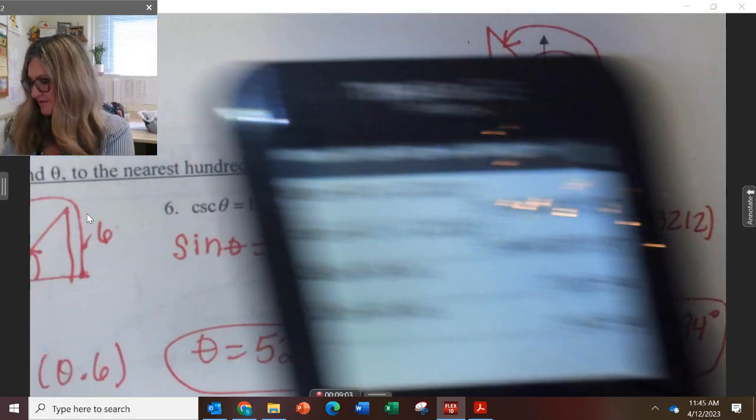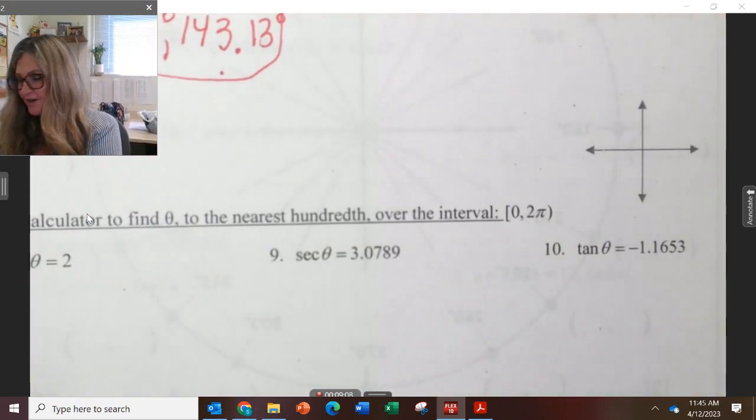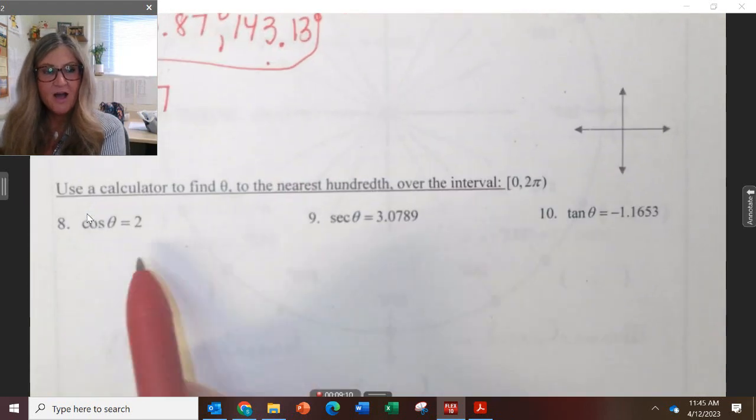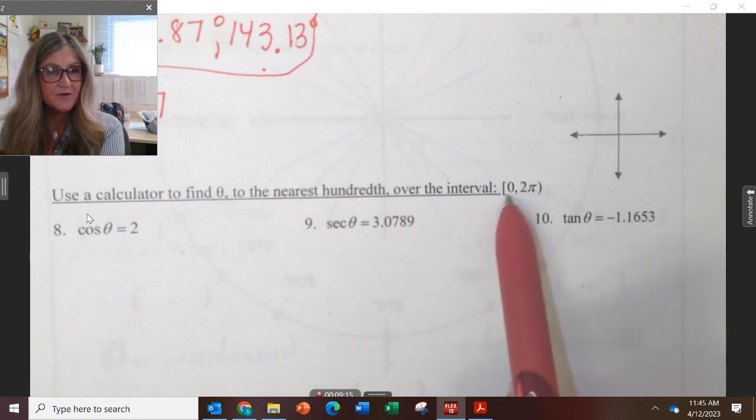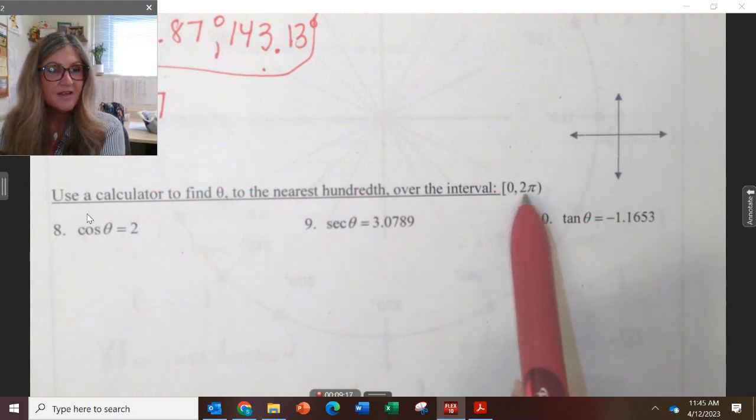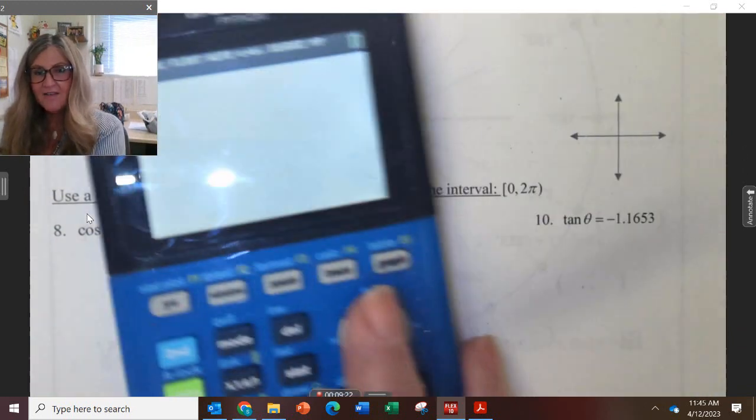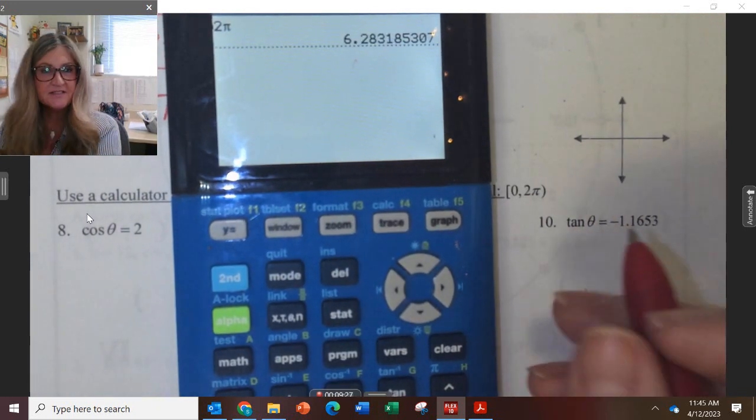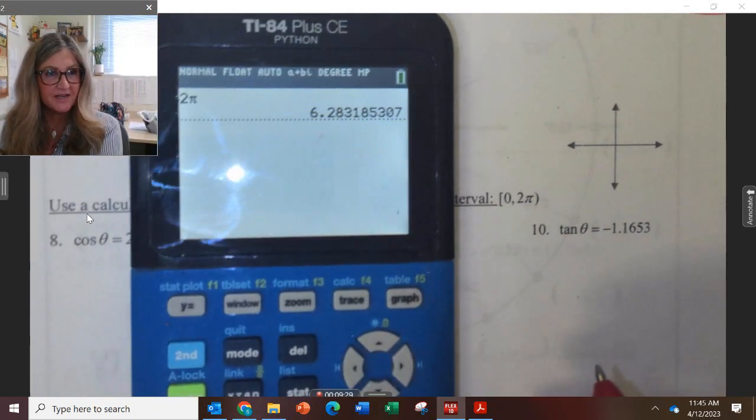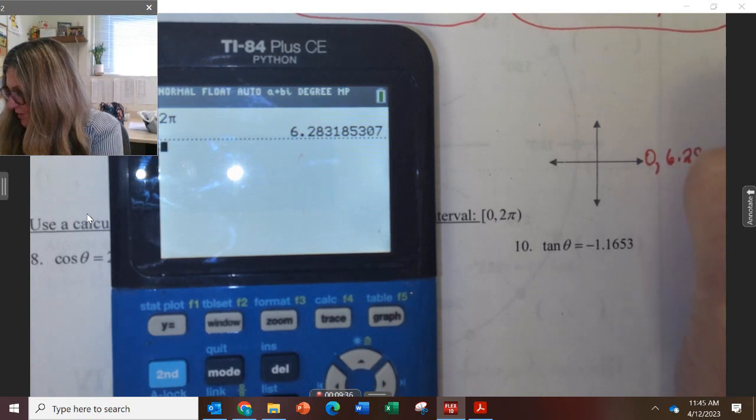Getting a little bit more difficult, we're kind of building on everything that we've got here. Now we have to use a calculator to find theta to the nearest hundredth between 0 and 2 pi. The calculator cannot give us an answer with a pi in it. We have to understand that 2 pi is the same thing as 6.28 radians. So right here is 0 radians, and it's also 6.28 radians.